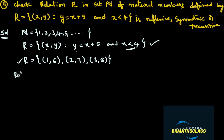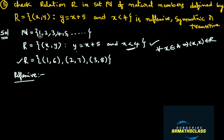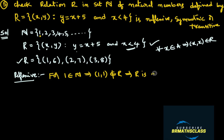Now we will check whether this relation is reflexive, symmetric, or transitive. First, we check reflexive property. The definition: for every x in set A, if the ordered pair (x, x) is in the relation, then the relation is reflexive. Taking element 1 in the set of natural numbers, is the ordered pair (1, 1) in this relation? No, it is not there. So we say that R is not reflexive.